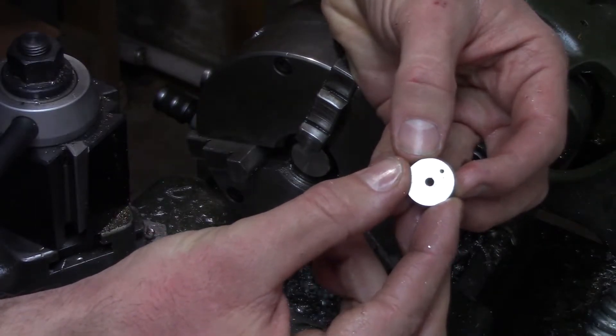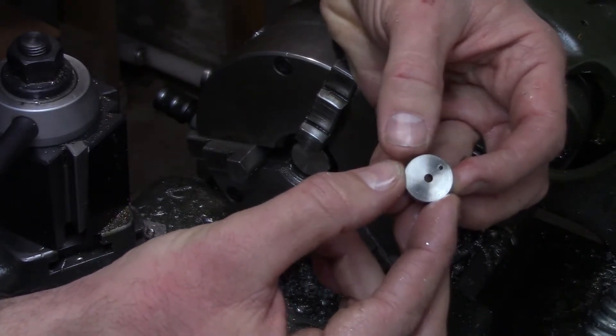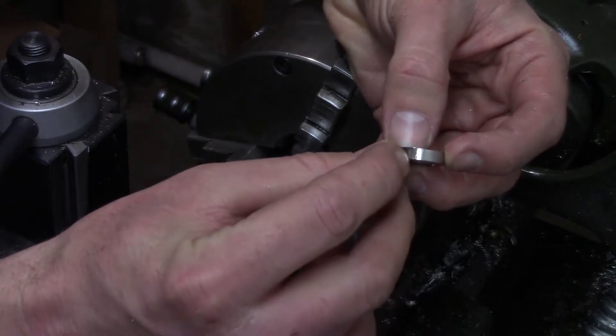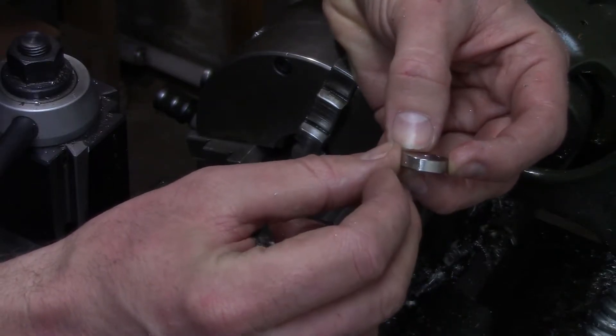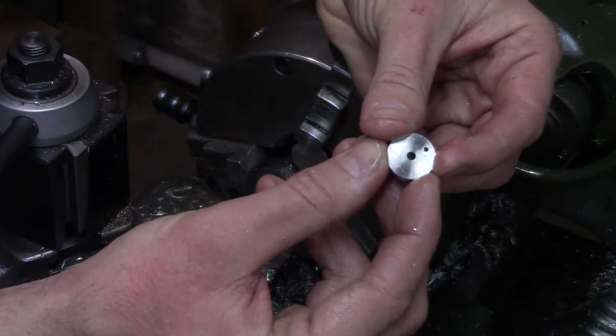And then that is the completed crank disc. The last thing I'm going to do off camera is drill a hole and tap for a set screw to hold this to the crankshaft.